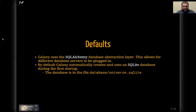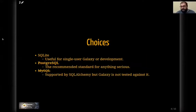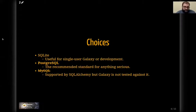SQLite is quick and easy to get a single instance of Galaxy up and running with no external services. But when you're running a production Galaxy server, you want a much more powerful and scalable database. We recommend PostgreSQL. Because we use a database abstraction layer, it is possible to use other things including MySQL, but we don't test on it and don't recommend it unless you have no other option.